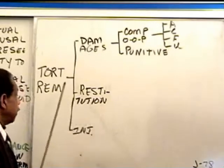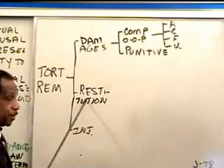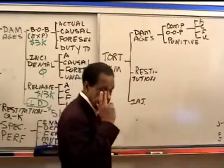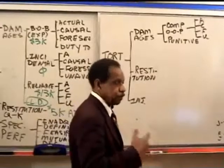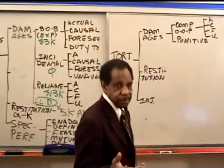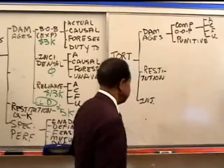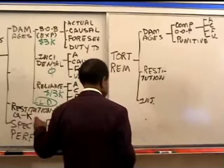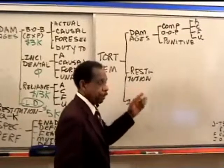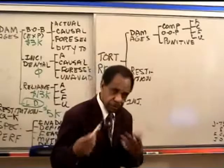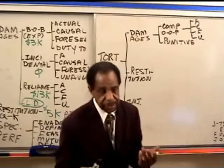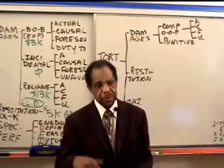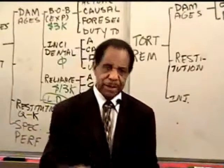The next type of remedy you may get for a tort is restitution. The idea behind restitution, again, is to prevent people from being unjustly enriched. That's the whole idea behind restitution, whether you're talking about restitution in contract law or restitution in tort law. It's just that the things you do to prevent unjust enrichment in tort law are a little different from the things you do to prevent unjust enrichment in a contract case.